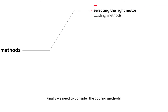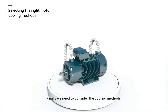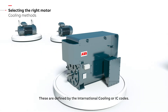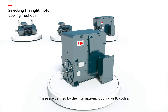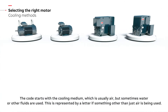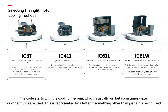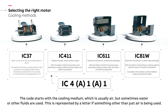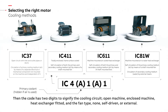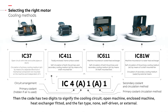Finally, we need to consider the cooling methods. These are defined by the international cooling or IC codes. The code starts with a cooling medium, which is usually air, but sometimes water or other fluids are used. This is represented by a letter if something other than just air is being used. Then the code has two digits to signify the cooling circuit — open machine, enclosed machine, heat exchanger fitted — and the fan type: none, self-driven, or external.